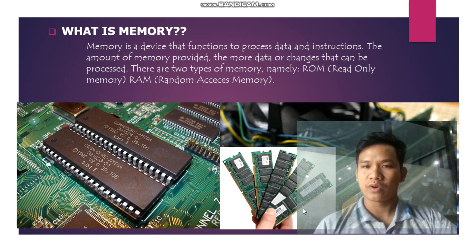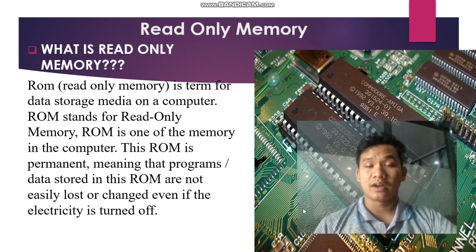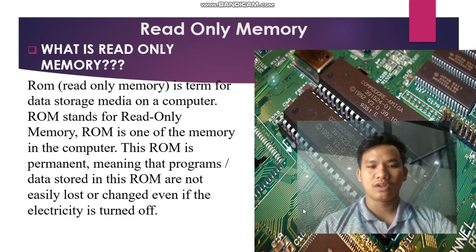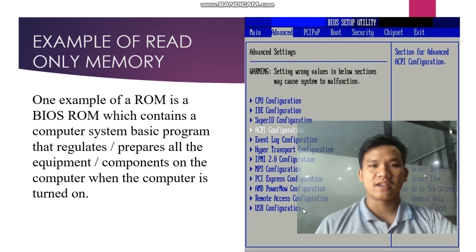There are two types of memory, namely ROM Read Only Memory and RAM Random Access Memory. Read Only Memory — ROM is a term for data storage media on a computer. ROM stands for Read Only Memory. ROM is one of the memory in the computer. This ROM is permanent, meaning that programs or data stored in this ROM are not easily lost or changed even if the electricity is turned off.